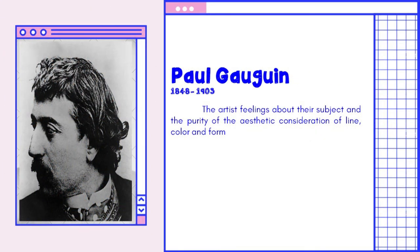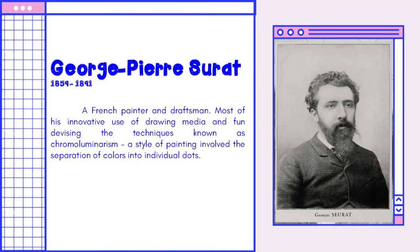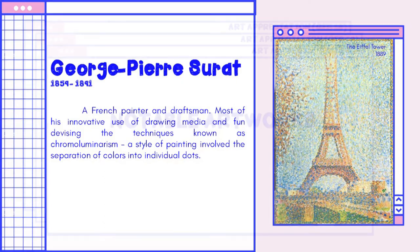Gauguin focused on the artist's feelings about their subject and the purity of aesthetic considerations of color and form. And Seurat was a French painter and draftsman, most known for his innovative use of drawing media and for devising the technique known as chromoluminarism, a style of painting that involves the separation of colors into individual dots.